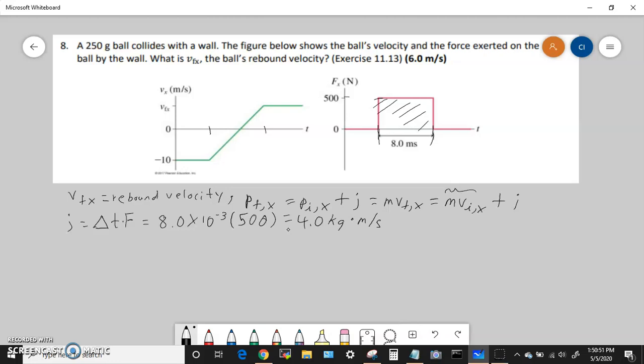So then we want to essentially find PFX, which is this. We want to just calculate this. Then the final momentum in the X, which is m·VFX, equals m, the mass is 0.250 times the initial velocity. So the initial velocity was this negative 10, right there's the initial velocity, so you plug in negative 10. Then you add the impulse which we calculated was 4, so then the final momentum has to be 1.5 kilograms by meter per second.